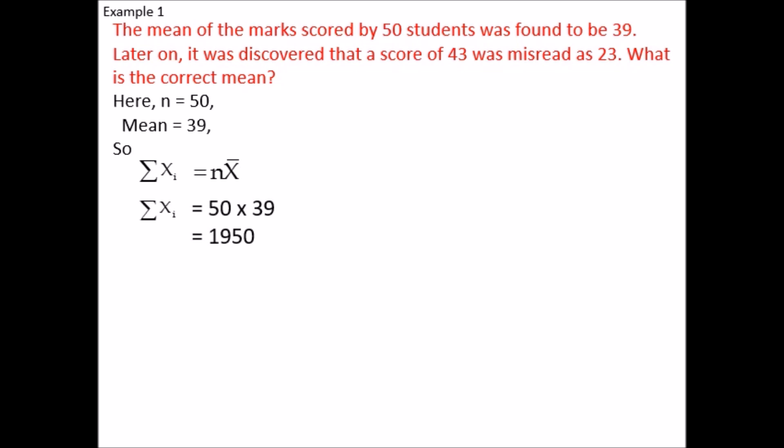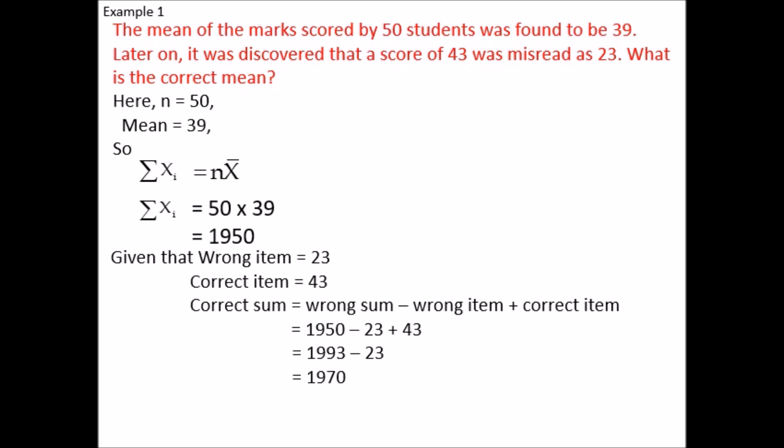The score of 43 was misread as 23. Iska matlab correct item is 43 and wrong item is 23. So, Correct sum = Wrong sum - Wrong item + Correct item = 1950 - 23 + 43 = 1970. Therefore, Correct mean = 1970 / 50 = 39.4.